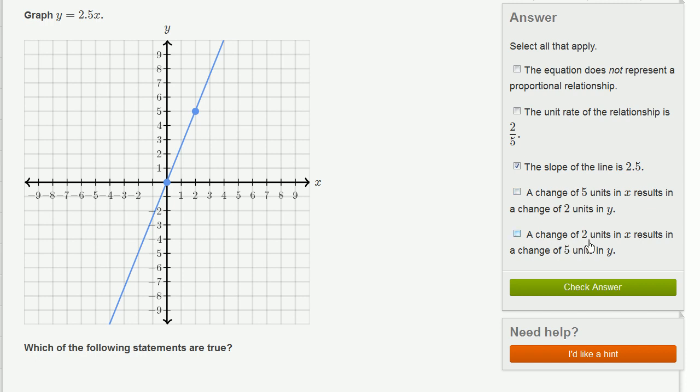A change of 2 units in x results in a change of 5 units in y. Well, we see that. A change in 2 units of x results in a change of 5 units in y. That's exactly what we graphed right over here. These two points show that. So this is definitely true.